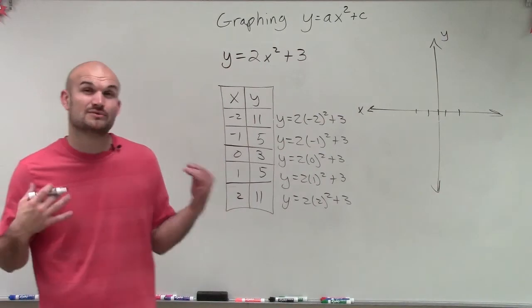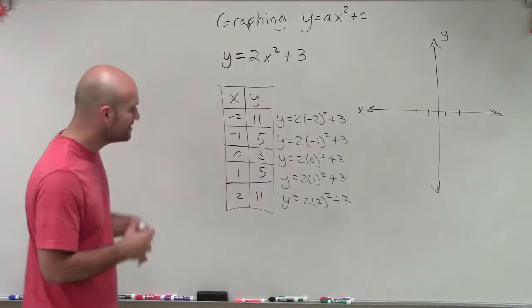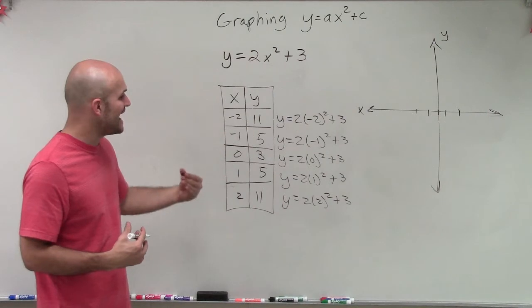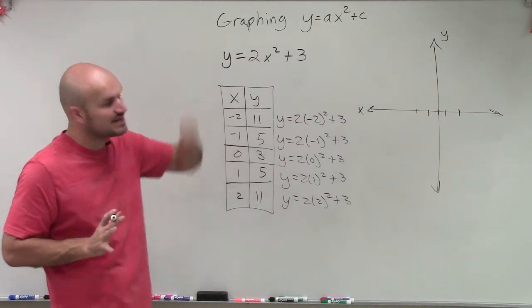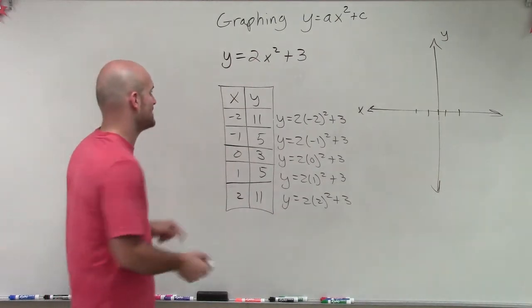All right, so now what we're going to do is we're going to plot these points. Notice, remember, I said the axis of symmetry is at 0, right? That's going to be our line that's going to separate our parabola into equal halves.